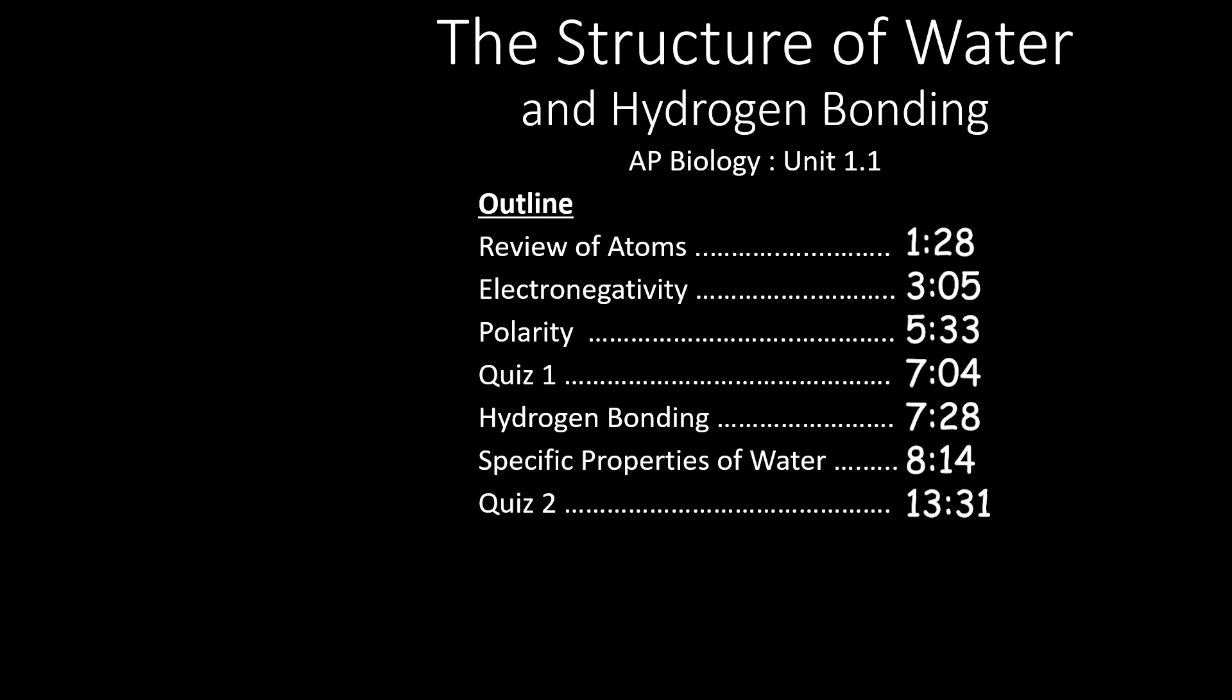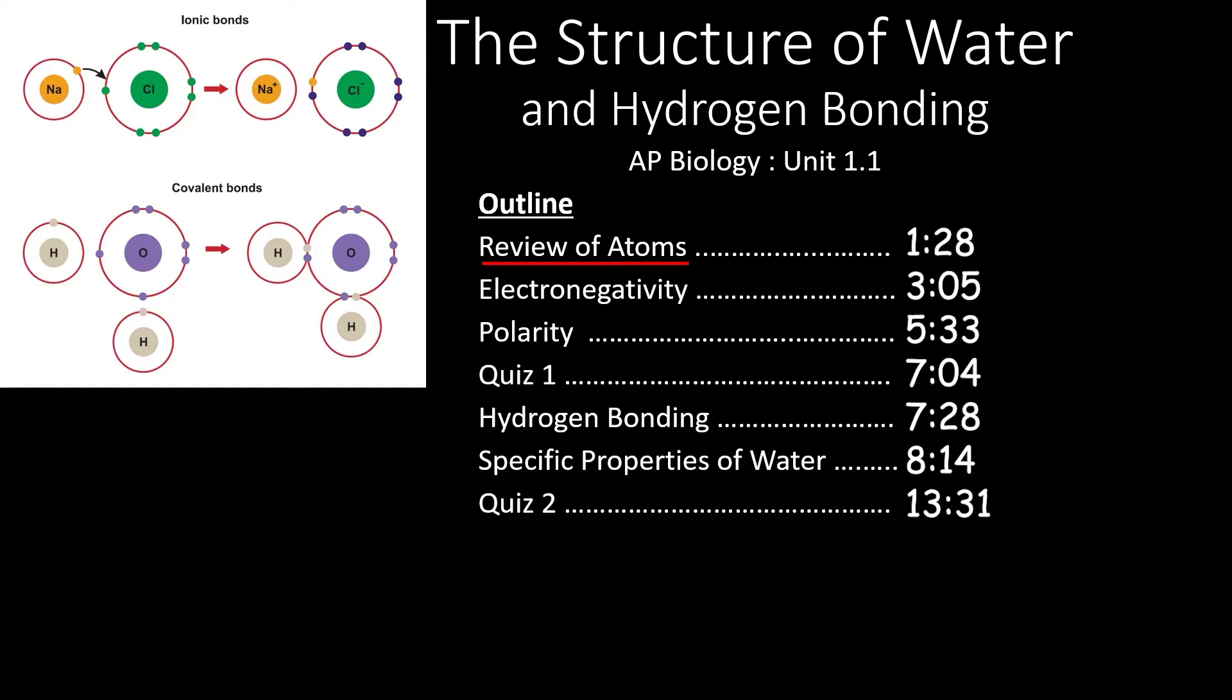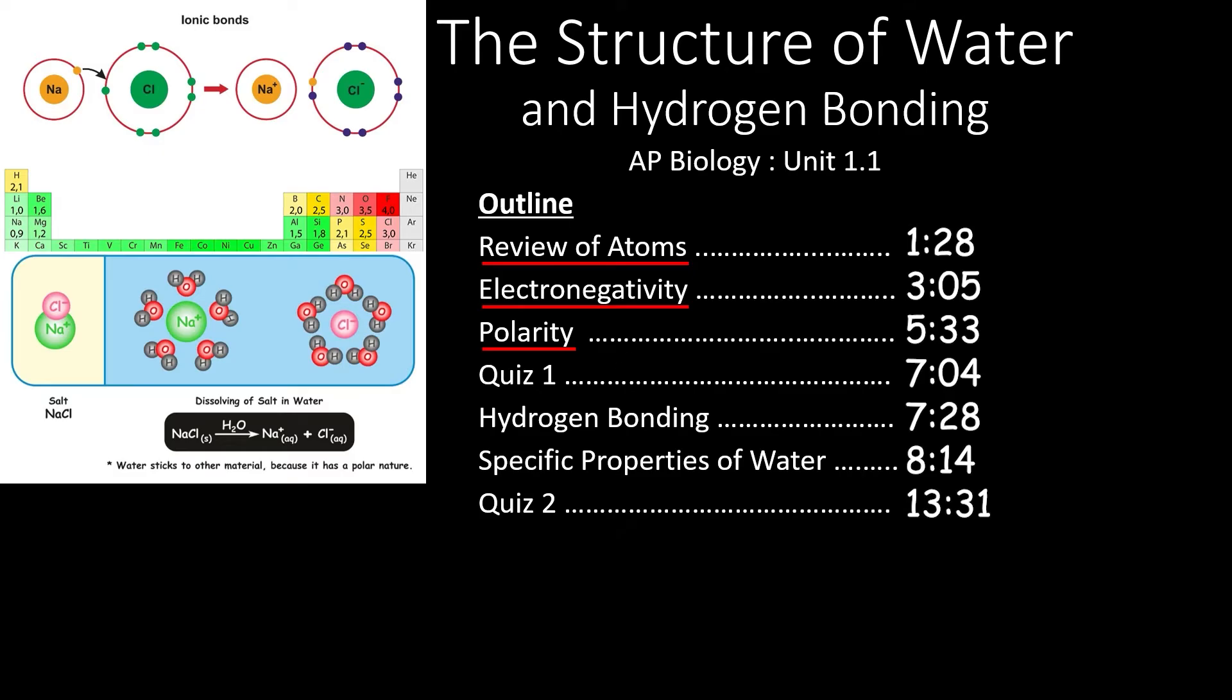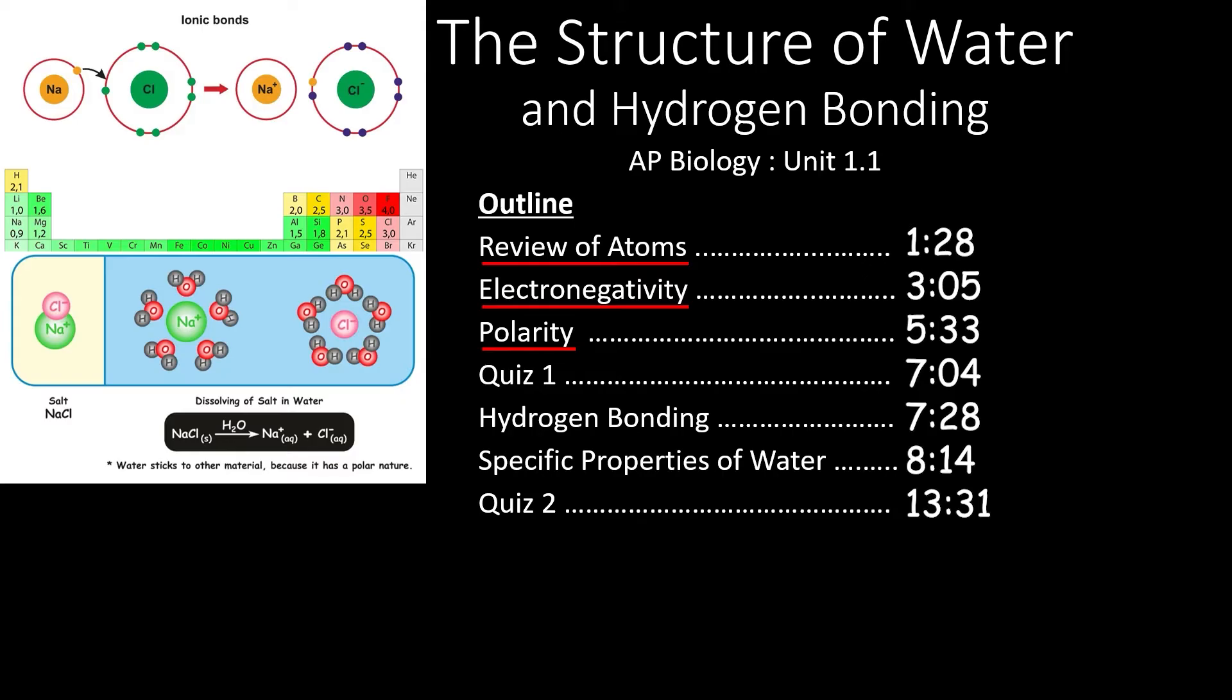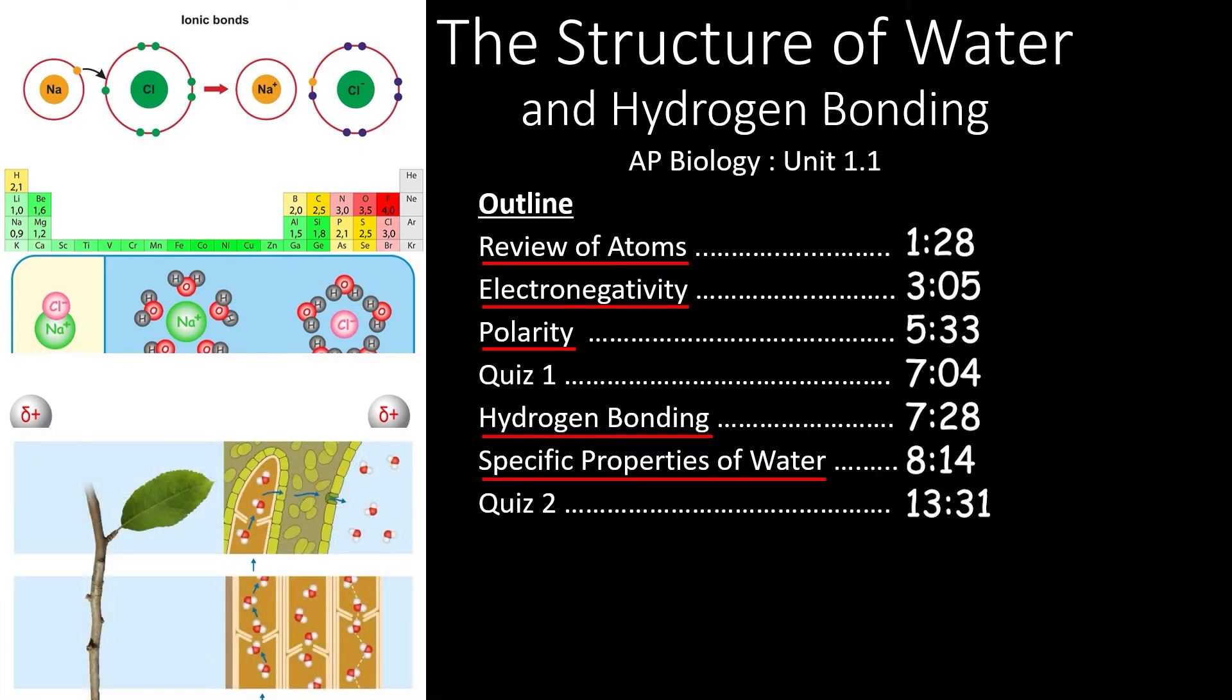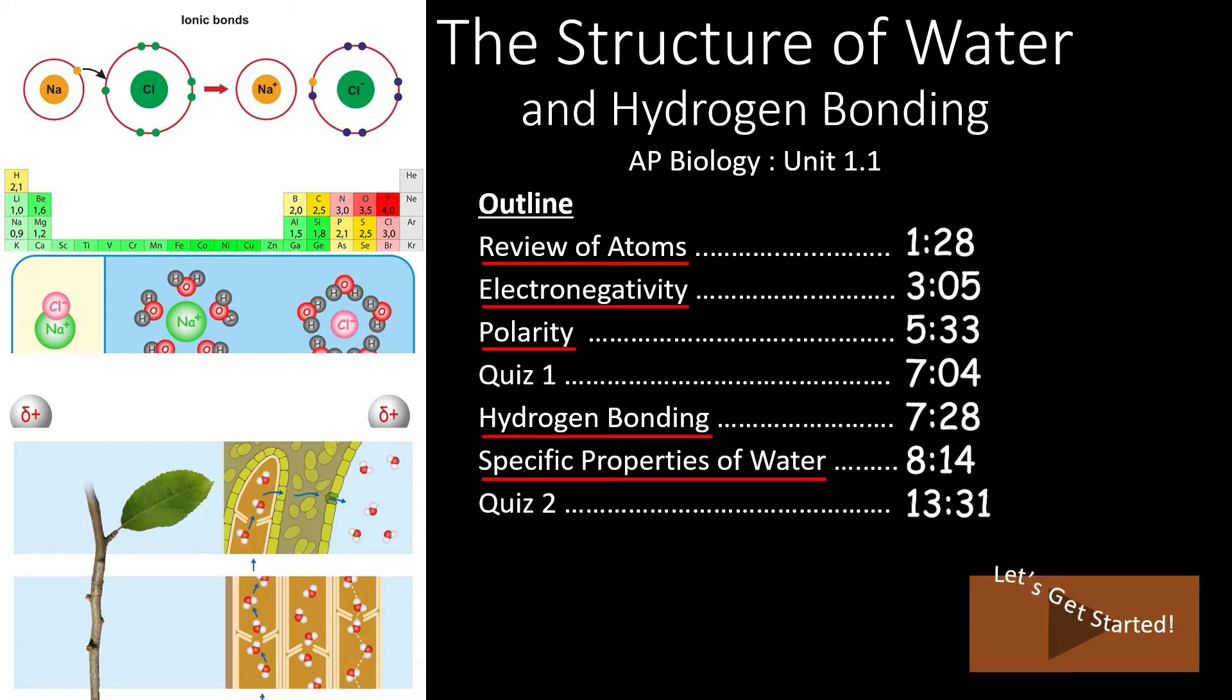This video covers the first topic in the AP Biology curriculum, the structure of water and hydrogen bonding. We'll start by reviewing atoms and the different types of bonds they form. Then we'll see the role that electronegativity plays in forming atomic bonds. This will lead us into what causes polarity and the role it plays in nature. After the quiz, we'll take a look at hydrogen bonding and see why it is so important for life on Earth. Finally, we'll take a look at a few of the specific properties of water that help make our planet habitable. If you only need to review one of these topics, feel free to skip to the times outlined here.